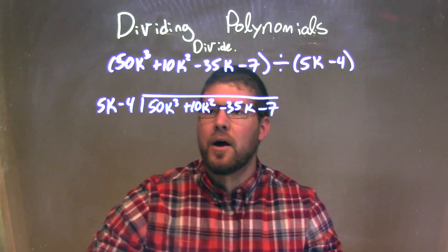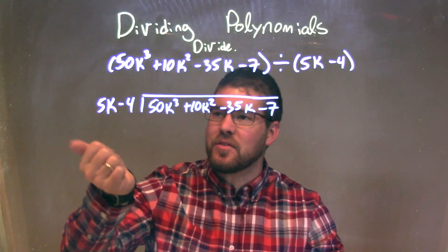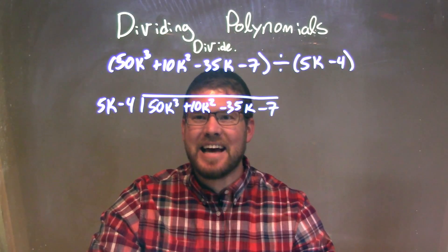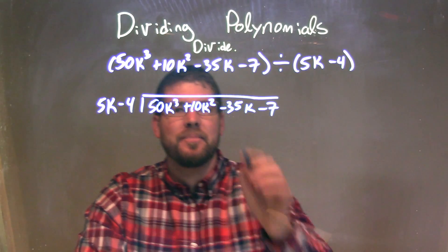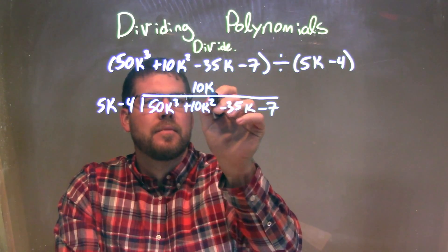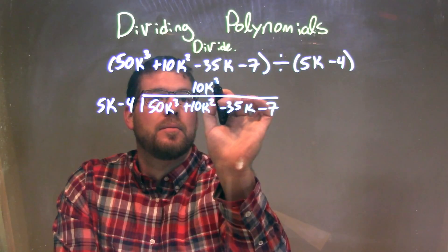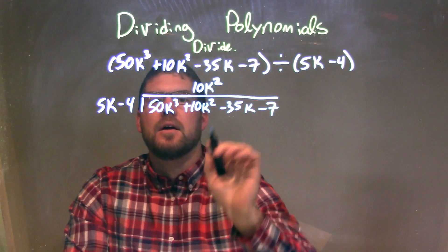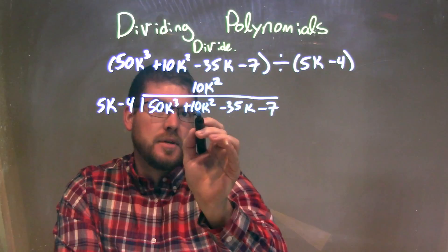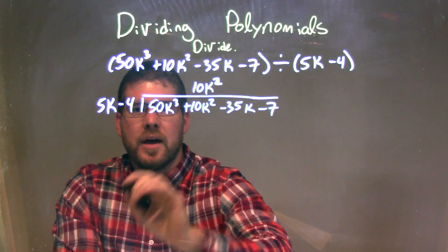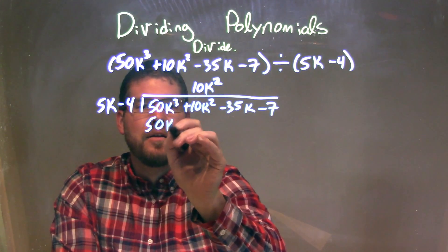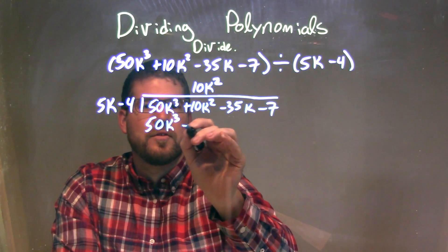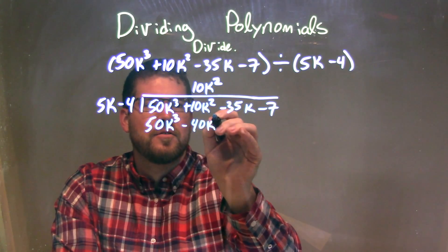Now I'm going to ask the question: what times 5k gives me 50k³? And that's just 10k². So 10k² — it's the same thing right there. 10k² times 5k is 50k³, and then 10k² times the minus 4 is minus 40k².